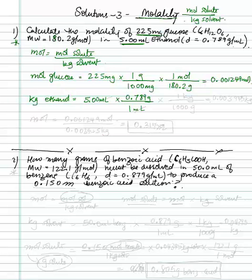I need to convert that into kilograms now. So milliliters, milliliters is gone. And in 1 kilogram, I have 1,000 grams. So that gives me 0.003945 kilograms of ethanol.